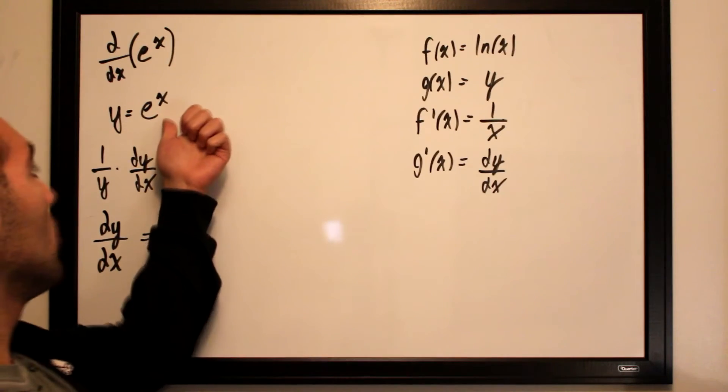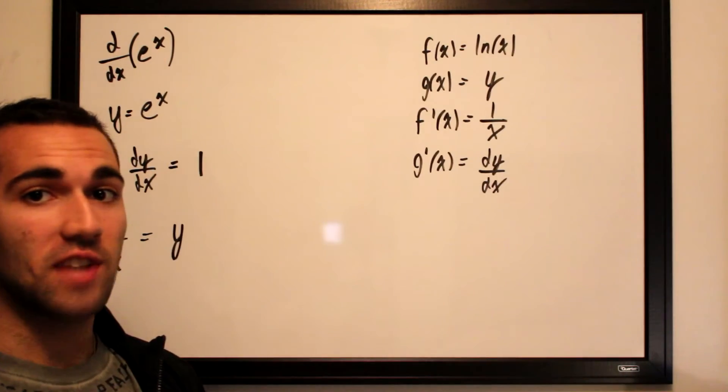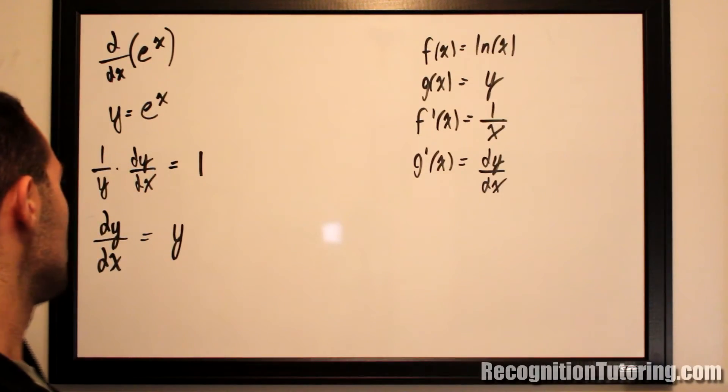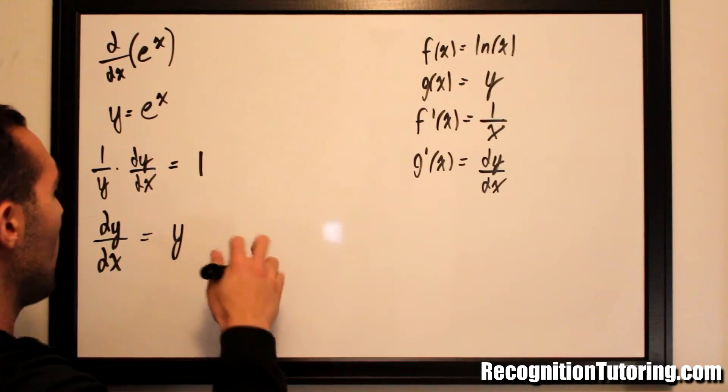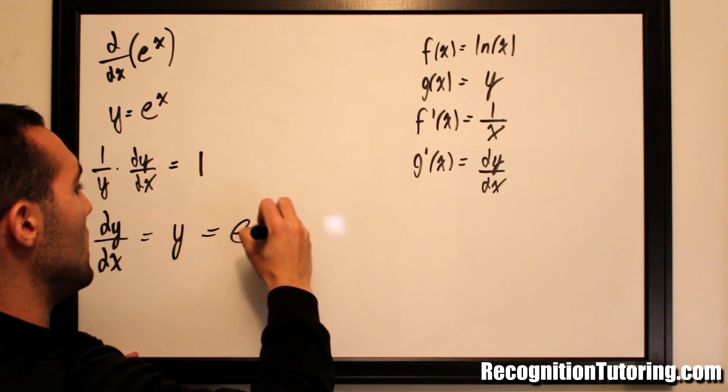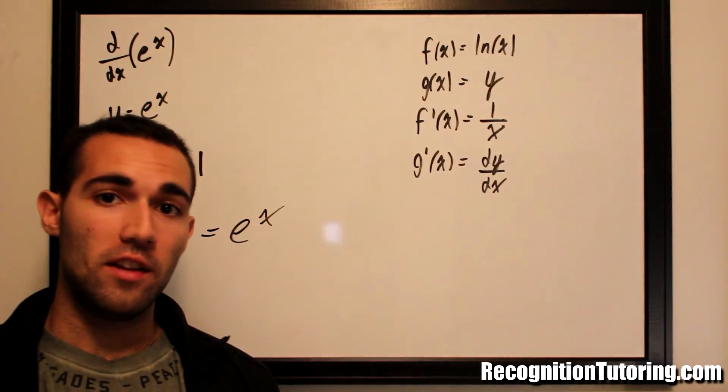And if you look up here, y is our initial function—it's exactly what we started with. So dy/dx is equal to y, which is also equal to e to the x. And that is how you differentiate e to the x using implicit differentiation.